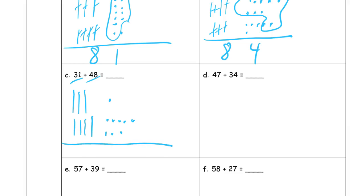My total I'm going to write underneath this line. And I see I have eight and one — that just makes nine. I can't make any tens with the ones there. And I'm just going to count my tens: one, two, three, four, five, six, seven.